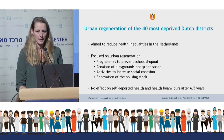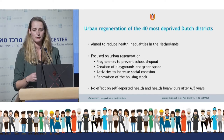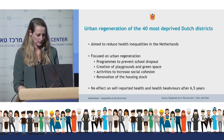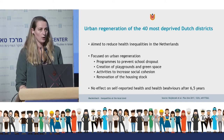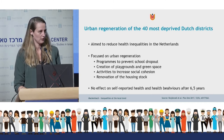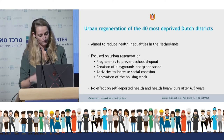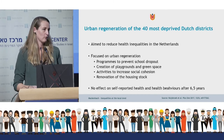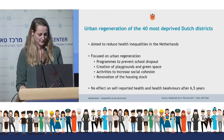Another example is the evaluation of the Urban-40 study in the Netherlands. The overall goal was to reduce health inequalities by improving living conditions in the 40 most deprived neighborhoods. Each district implemented a range of interventions — programs to prevent school dropouts, new playgrounds, improved green spaces, activities to improve social cohesion, and renovated houses. Unfortunately, the researchers found no effects of the regeneration program on behavioral or health outcomes. One explanation for these disappointing findings is that because the neighborhoods were regenerated, housing prices increased and the original relatively poor inhabitants were no longer able to afford to live there.